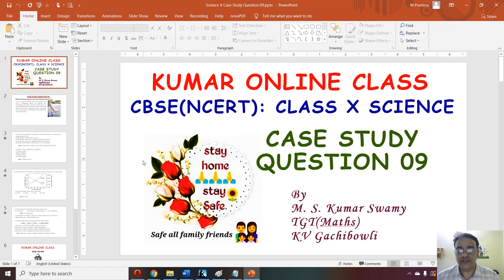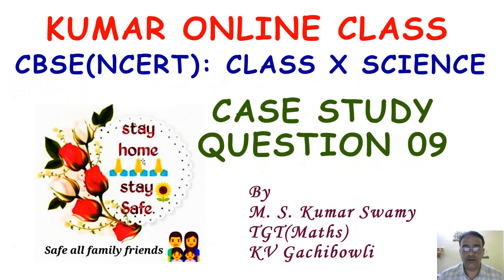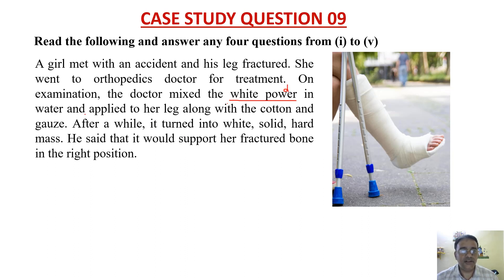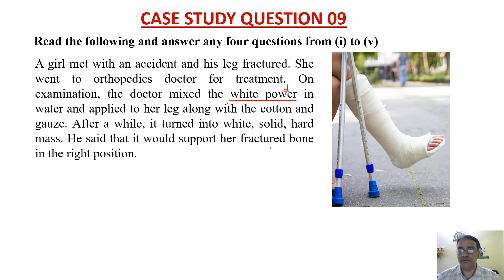We are going to start case study question number nine, which is based on chemistry — acids, bases, and salts. A girl met with an accident and her leg was fractured. She went to an orthopedic doctor for treatment. On examination, the doctor mixed a white powder in water and applied it to her leg along with cotton and gauze. After a while, it turned into a white solid hard mass that would support her fractured bone in the right position.